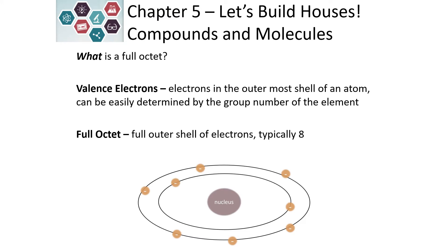If we look at our Bohr model here, in the nucleus we have six valence electrons in the outermost shell. Which element would this be? This would be oxygen, because it has six electrons in the outermost shell. The two in the inner shell come from the first row of the periodic table, and the six in the outer ring come from the second row. So oxygen wants to gain two electrons in order to have an octet in that outer shell.